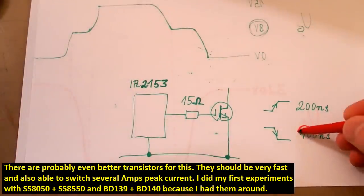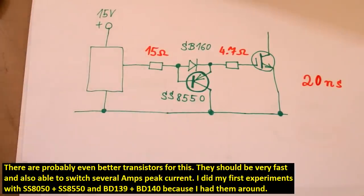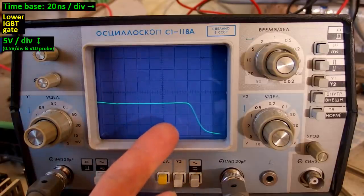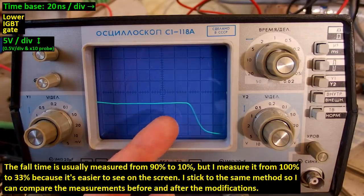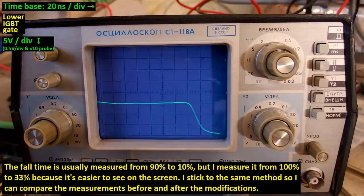Originally it was discharging the gate in 100 nanoseconds and now it's 20 nanoseconds. And here it is on the oscilloscope and it's 20 nanoseconds per division and as you can see, it discharges the gate from 15 volts to 5 volts in one division or 20 nanoseconds. 5 times faster than before.